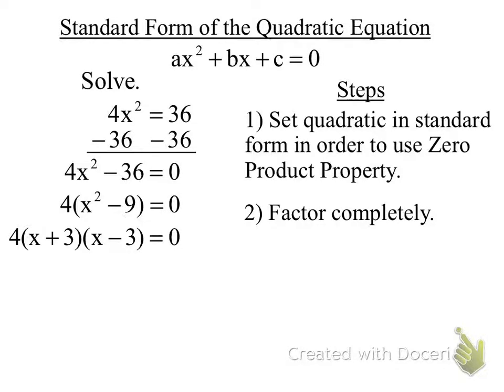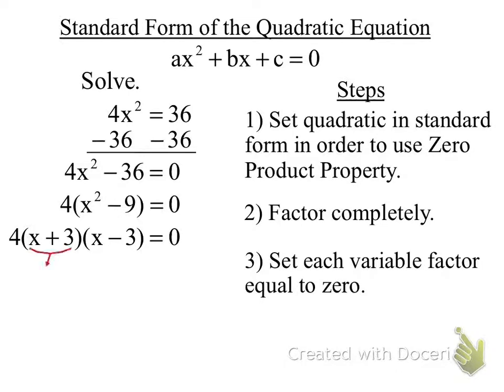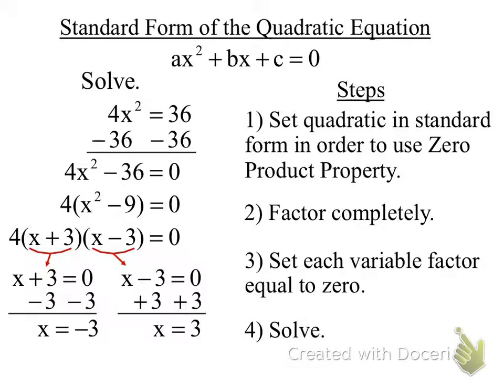You're right, we could have divided out that four. We didn't have to. We could leave it there. It just made no difference to us. Remember when I'm using the zero product property, I never set four equal to zero because it can never be a zero. The only things I'm looking for are the variable factors. So I set the variable factor equal to zero. X plus three equals zero. X minus three equals zero. And we get X is equal to? Charlotte? X is equal to three and negative three. Is everybody remembering how we did this?